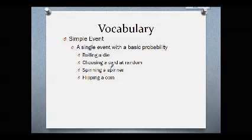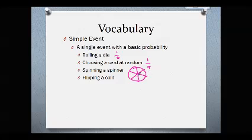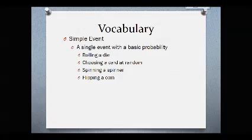A simple event is what we discussed yesterday — it's a basic probability. It's one thing that happens. So when rolling a die, getting a number less than 2: there's one side that's less than 2, and there are 6 sides to the die. Choosing a card at random — if you want a diamond, there are 4 suits, so you have a 1 in 4 chance of getting a diamond. Spinning a spinner depends upon how many sections there are; if there are 6 equal sections and 3 are pink, you have a 3 in 6 chance, which equals a 1 in 2 chance. Flipping a coin is a 1 in 2 chance. That's simple probability — what you want over the total number of options.